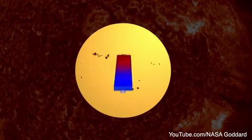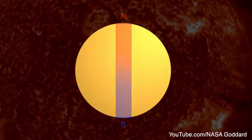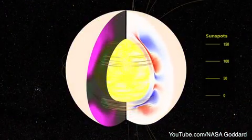So every 22 years, the poles return to the position where they started the cycle. The flip is due to the complex movement of magnetic fields inside the Sun that are constantly stretching,